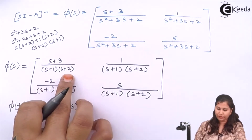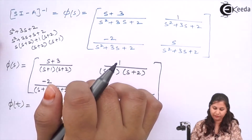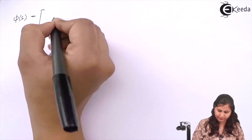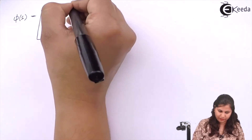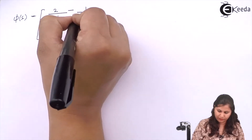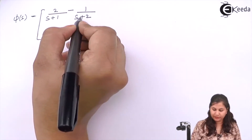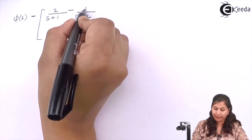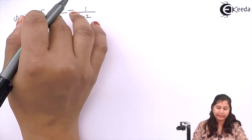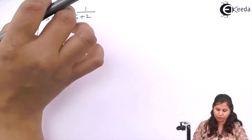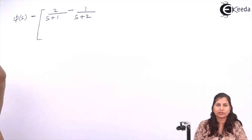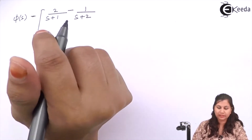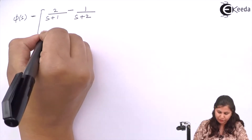For the element (s+3)/[(s+1)(s+2)], the partial fractions give 2/(s+1) minus 1/(s+2). Verifying: 2(s+2) - (s+1) = 2s+4 - s-1 = s+3, which confirms the result. Similarly, the element -2/[(s+1)(s+2)] is decomposed into its partial fractions.